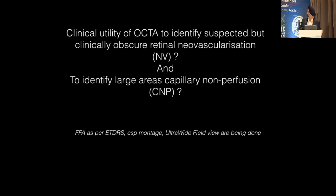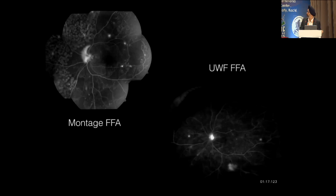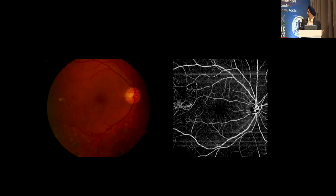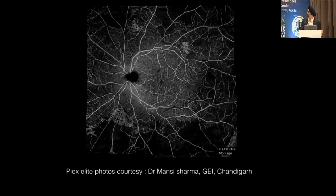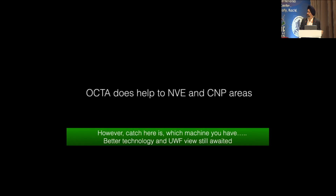The clinical utility of OCTA to find NVE or CNP areas: we have been doing montages, ETDRS photographs, or wide-field imaging for this. This is how angiograms show CNP areas and neovascularization, and this is how OCTA will look — a 12x12 scan. By making montages of the 12x12 scan, it nearly covers the whole ETDRS field. Without injecting dye, we can see CNP areas and neovascularization. OCTA helps pick up neovascularization and CNP areas, though the catch is which machine you have.